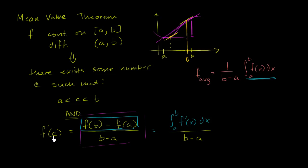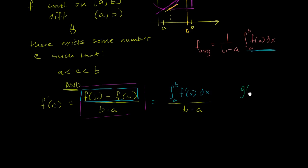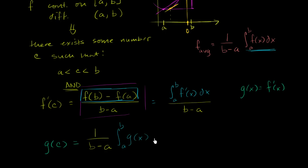There must be a c that, when you evaluate the derivative at c, it takes on the average value of the derivative. If we let g of x equal f prime of x, then f prime of c is the same as g of c, which equals one over b minus a times the definite integral from a to b of g of x dx. So there exists a c where g of c is equal to one over b minus a times the definite integral from a to b of g of x dx.